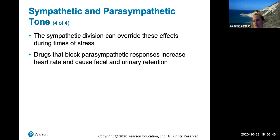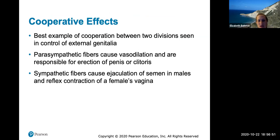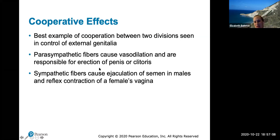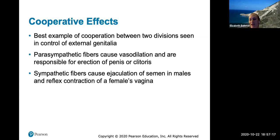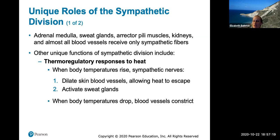The parasympathetic division normally dominates the heart and smooth muscle of the GI and urinary tracts, slowing the heart and dictating normal GI activity. These organs exhibit parasympathetic tone — they are always slightly activated. The sympathetic can override these effects during stress. Drugs blocking parasympathetic responses increase heart rate and cause fecal and urinary retention. One cooperative effect exists with external genitalia: parasympathetic fibers cause vasodilation responsible for erection, and sympathetic fibers cause ejaculation.